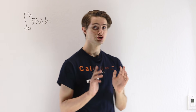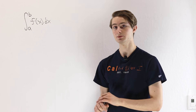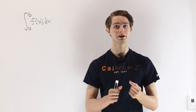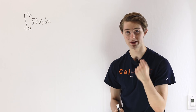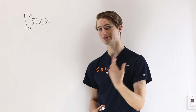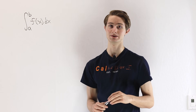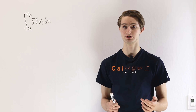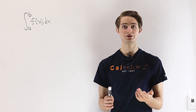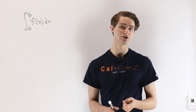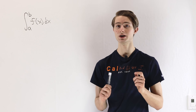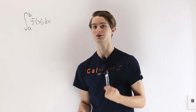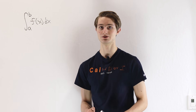We are going to talk about changing variables in the context of double integrals and why we have to multiply by the Jacobian — what exactly that value means in terms of computing volumes. In order to do that, we first have to get a better understanding of what u-substitution means in the context of single variable integrals.